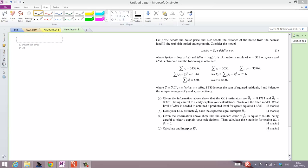A random sample of N equals 321 on L price and L dist is observed and the following is obtained. We've got a lot of numbers here and we're asked in question A to show that the OLS estimators are equal to these values.